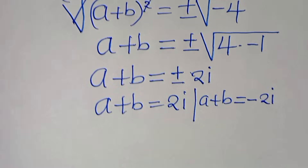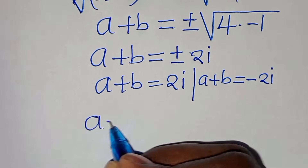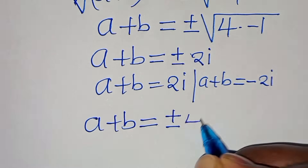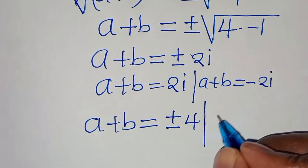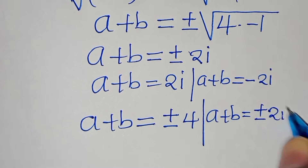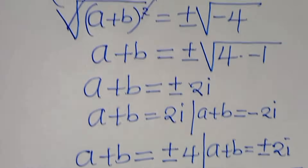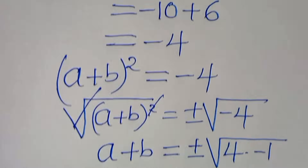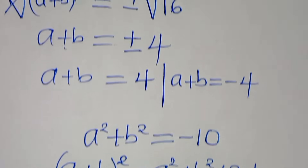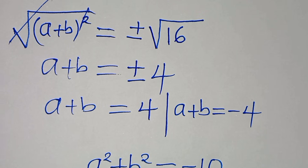So the complete solution is: a plus b equals plus or minus 4, and a plus b equals plus or minus 2i. This is the solution to this algebra problem. Please like this video and subscribe — see you in the next video!